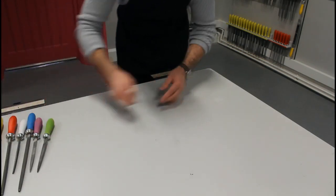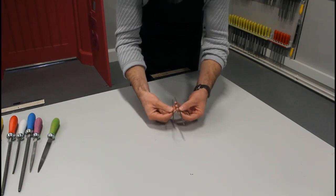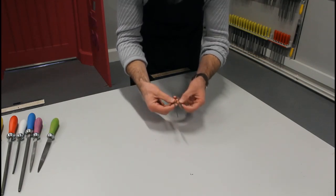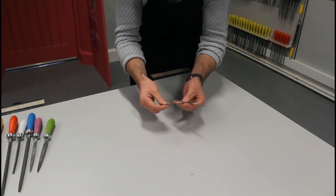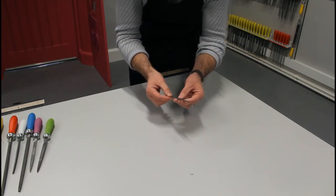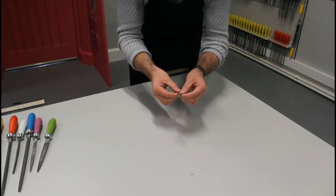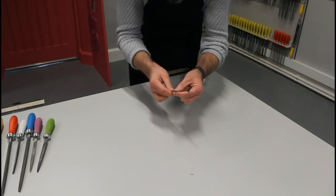Again, a couple of different files here. Very small files. These are known as needle files. Used for quite accurate work. Try to get into smaller places. Again, the profiles are quite similar to the large ones. So that's how you can identify. Flat one and a square file.